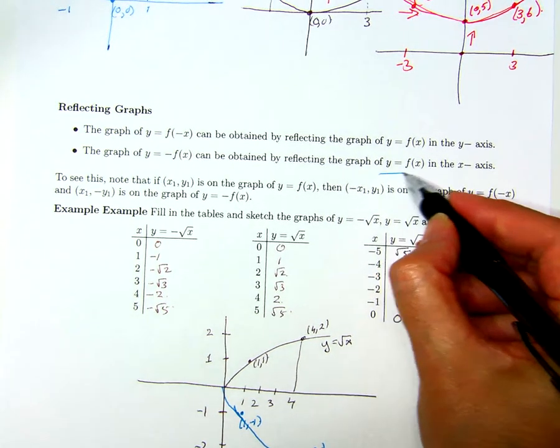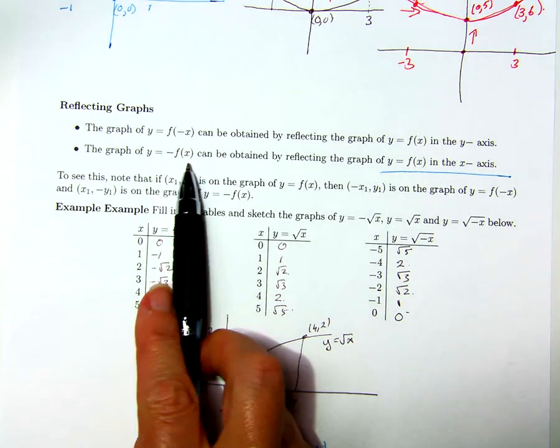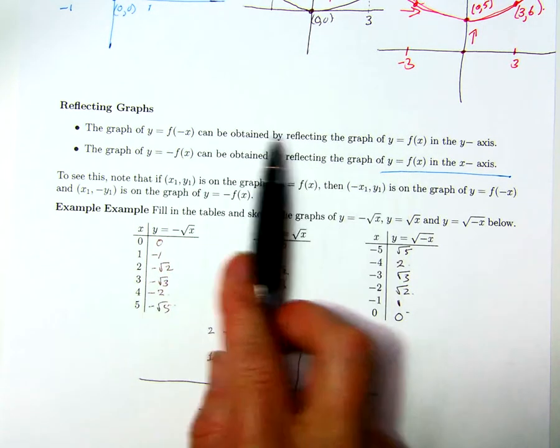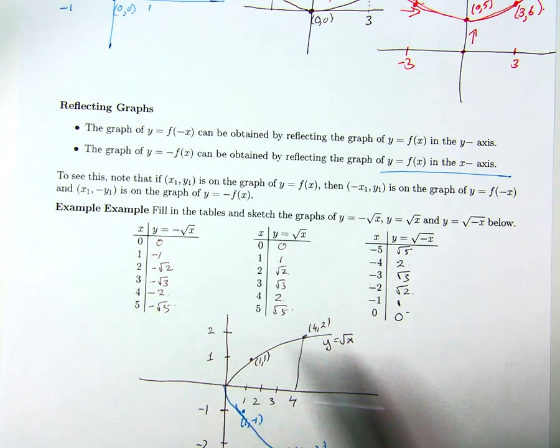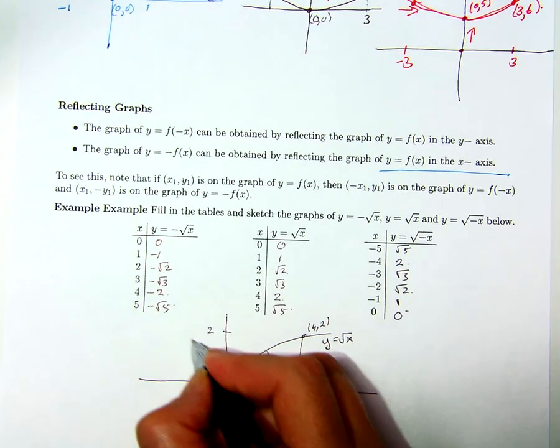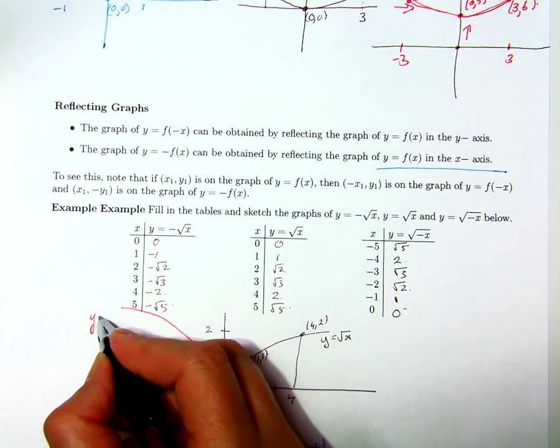So that's if I multiply the entire formula by a negative. If I replace x by -x, the graph gets reflected in the y-axis. That means the y-values remain the same, but the x-values change to negative.